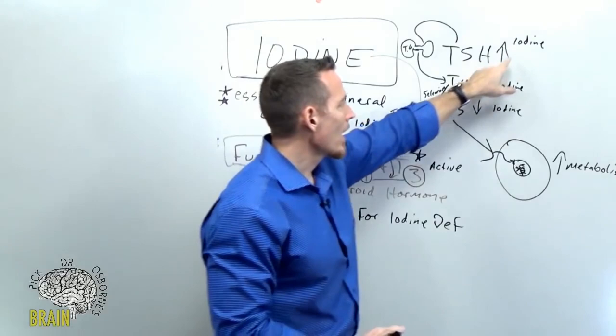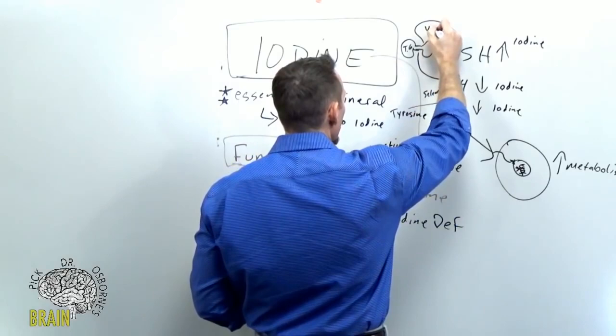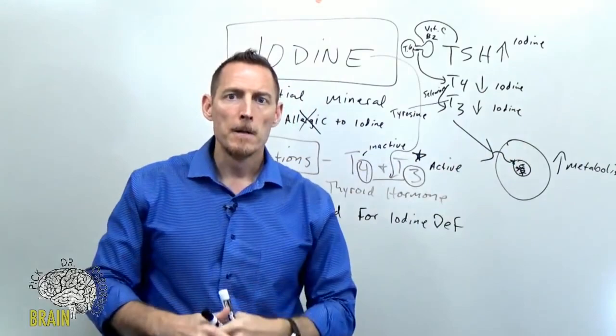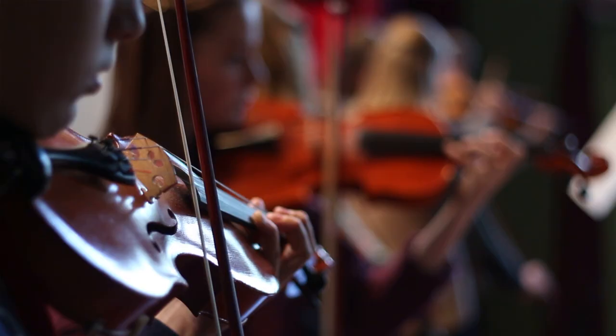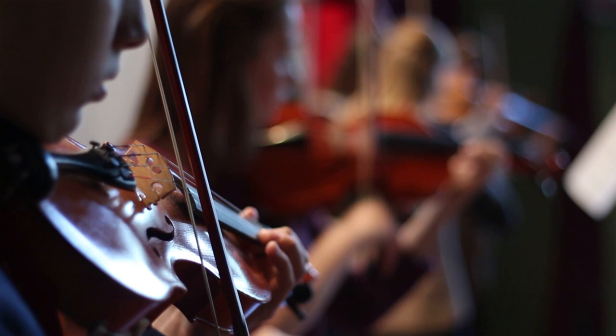And one of the other things that has to happen since we're on the topic is in order for your thyroid gland to properly trap iodine that requires vitamin C and it requires vitamin B2. And so without those two nutrients, that doesn't happen very well. So you've got this kind of orchestration of different nutrients that work synergistically with each other. Just like in the orchestra, you've got violins, you've got cellos, you've got big drums. They all sound beautiful when they play together. Well, it's the same thing here. Your thyroid can work beautifully if all these nutrients are playing together.